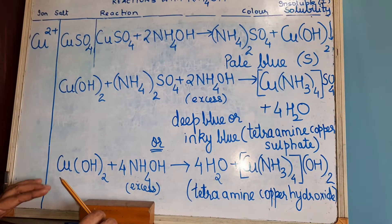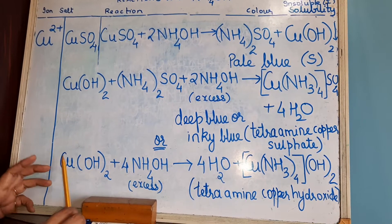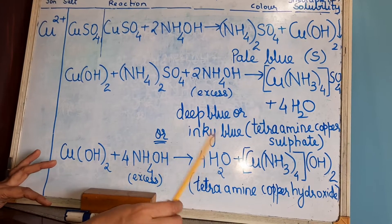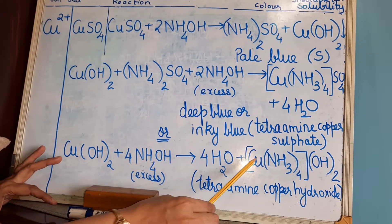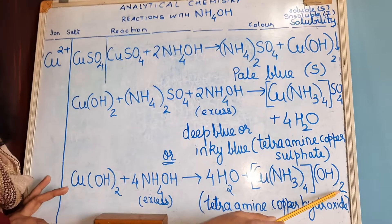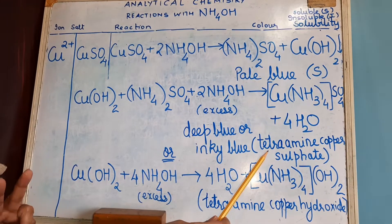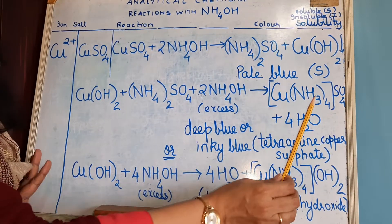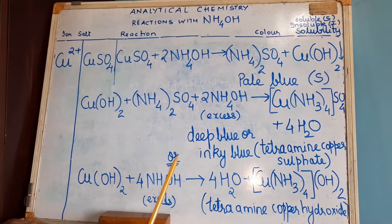For the second reaction: take the precipitate, add excess of NH4OH, and you get tetraamine — tetra is 4 — NH3 copper hydroxide. Since copper valence is 2, OH becomes twice. Copper and sulphate both have valence plus 2 and minus 2, so there is no coefficient of 2 there. This is the reaction with copper salts.